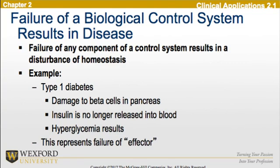The failure of a biological control system results in disease. The failure of any component in the control system results in a disturbance of homeostasis. An example of this would be type 1 diabetes. The damage to beta cells in the pancreas is what causes the disease — insulin is no longer released into the blood and hyperglycemia results. This represents a failure of the effector. Any component of the control system can result in the disturbance of homeostasis.